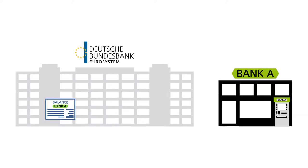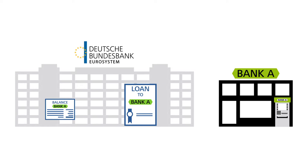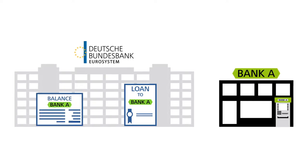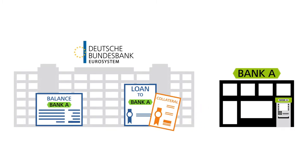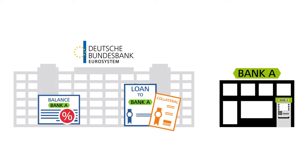But how do central bank balances arise? One way is when the central bank extends a loan to a commercial bank. The central bank then credits the loan amount to the commercial bank's account. However, the commercial bank is required to pledge collateral — one example being securities — against the loan and pay interest on it.